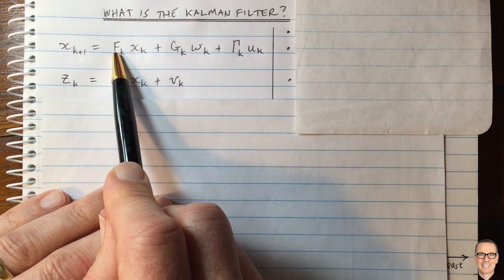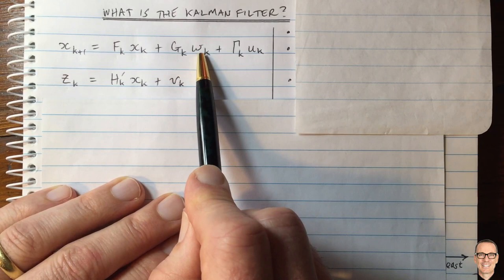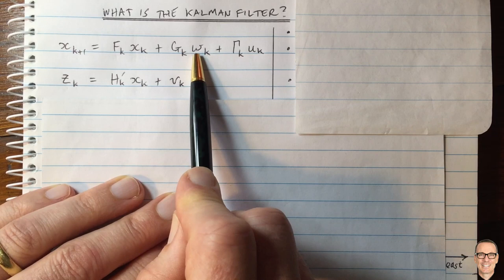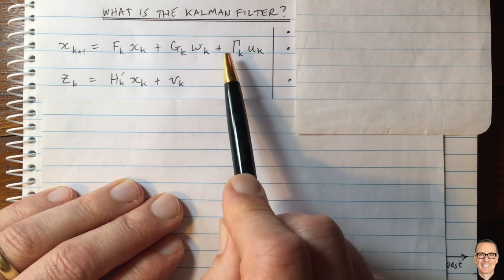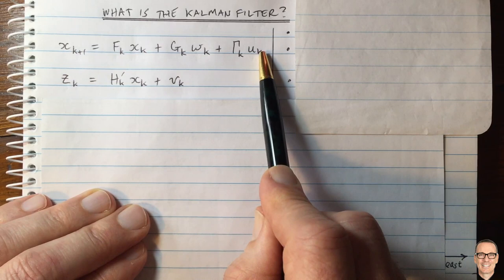There's also disruption that happens — noise gets added to that. The noise here we're assuming is Gaussian, although we could be more general. That's multiplied by a matrix, so this is a Gaussian vector. Plus we're allowing for some deterministic inputs to this system, and that gets multiplied by a matrix as well. So this is what we call our state space equation.